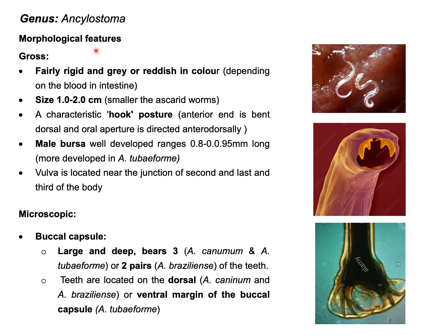Regarding morphological features of the genus Ancylostoma: the size of the parasite is around one to two centimeters, making them smaller than ascarid worms. The color is grayish-white but depends on the presence or absence of blood in the gut. One important feature is the hook-like posture — the anterior portion of the parasite is slightly bent and the oral aperture is directed anterodorsally, which is why this parasite is also known as a hookworm. As a bursate nematode, the male will have a very well-developed bursa.